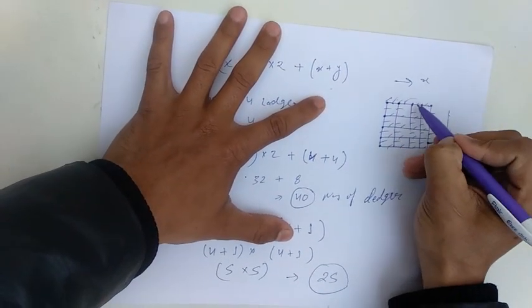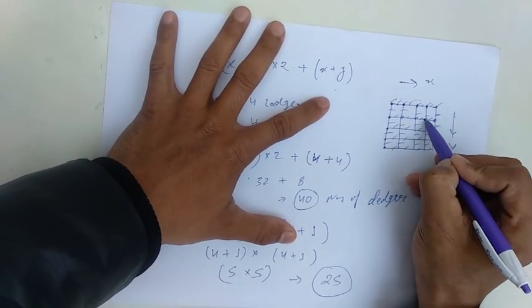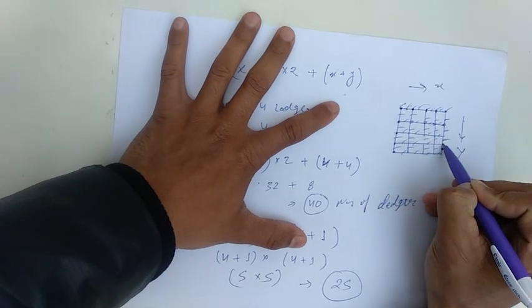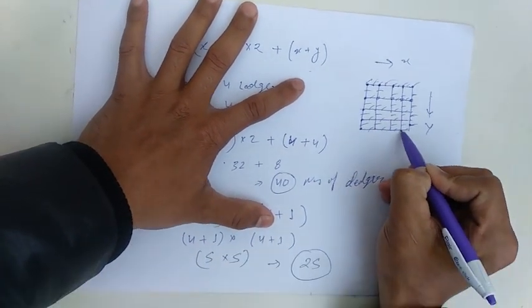And you can check this: 1, 2, 3, 4, 5, 6, 7, 8, 9, 10, 11, 12, 13, 14, 15, 16, 17, 18, 19, 20, 21, 22, 23, 24, 25.